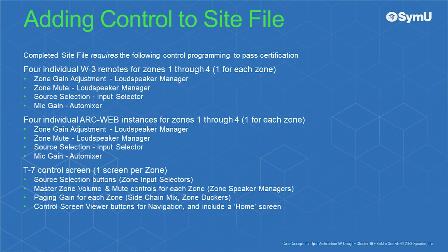Four individual W3 remotes for zones 1 through 4, one for each zone, which will be identical to the ArcWeb remote controls: zone gain adjustment and zone mute from the loudspeaker manager, source selection using the mono input selector, and microphone gain control from the automixer. Your site file will also include four individual ArcWeb instances for zones 1 through 4, one for each zone, which will be identical to the W3 remote controls: zone gain adjustment and zone mute from the loudspeaker manager, source selection using the mono input selector, and microphone gain control from the automixer.